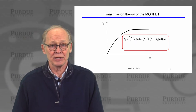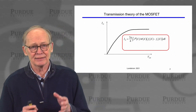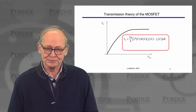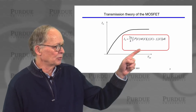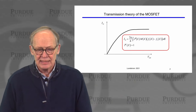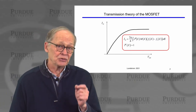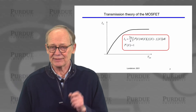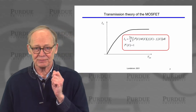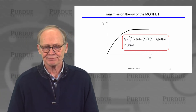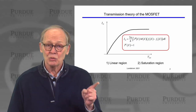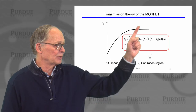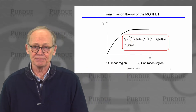We're going to call this the transmission theory of the MOSFET because transmission T plays a central role in what we do. We have our general current expression, and we're going to assume the transmission is 1, so we have a ballistic MOSFET — any electron that enters from the source leaves from the drain. We'll first discuss the linear region, and then the saturation region.